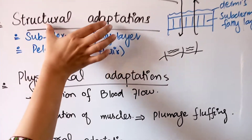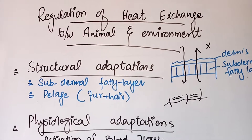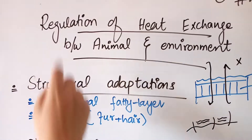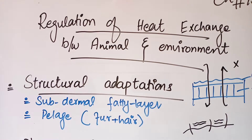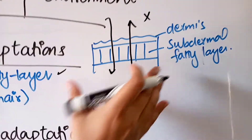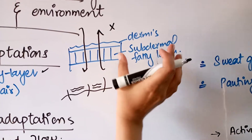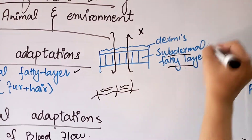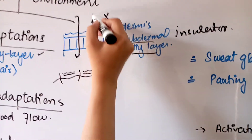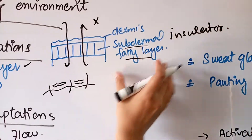When we discuss structural adaptation in a living organism or animal, some structures can naturally regulate the heat of the body. The first is the sub-dermal fatty layer. If we look at the skin — the dermis — this sub-dermal fatty layer works as an insulator, preventing heat from the body or the environment from moving inside or outside.